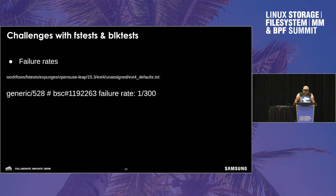Here's a Leap 15.3 failure. For those that don't know, Leap 15.3 also means it's an SLE bug too, because there's binary compatibility between the kernels and user space. This is an example where you have an ext4 failure failing one out of 300 times, so you have to run the test about 300 times to get it. When I ask file system developers how many times they've run a fast test in a loop, they look puzzled — not many people do that. But it turns out if you do run a fast test in a loop, you eventually will get a failure.